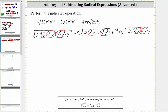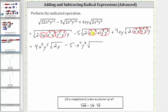Now let's simplify. The square root of 16 is equal to four. The square root of x cubed times x cubed is equal to one factor of x cubed. The square root of y to the fifth times y to the fifth is equal to one factor of y to the fifth. And we're left with the square root of two y. Then we have minus five times — the square root of y to the fourth times y to the fourth is equal to one factor of y to the fourth, and the square root of y to the eighth times y to the eighth is equal to one factor of y to the eighth. And we still have times the square root of two x.